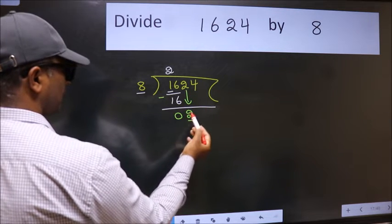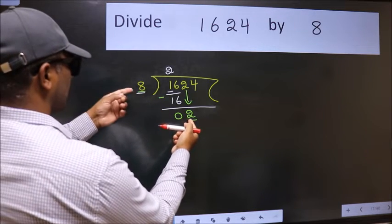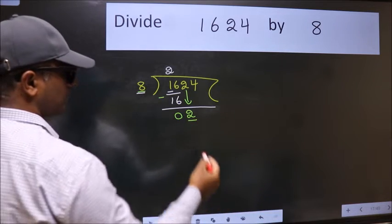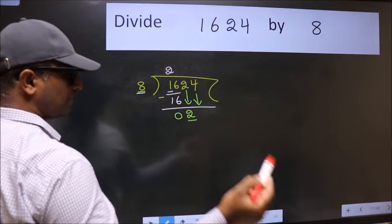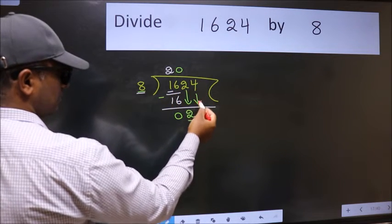Now, here we have 2 and here 8. 2 is smaller than 8. So, we should bring down the second number. And the rule to bring down the second number is put 0 here. Then only we can bring this number down.